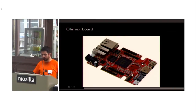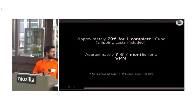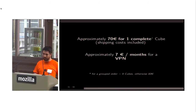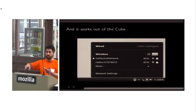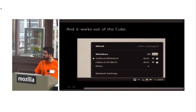It's a small Olimex board with a box, a power supply, a wireless antenna, and a memory card — approximately 70 euros for a complete cube with shipping included. The VPN, which is the interesting part, is approximately 7 euros per month with our local non-profit ISPs. As we get more users the cost will go down. It works out of the box — there are two wireless networks, one Tor network and one pirate box, and you just plug it in and it works.